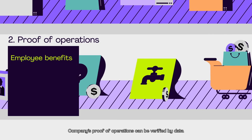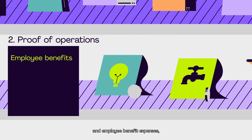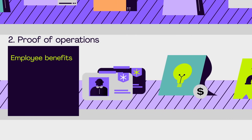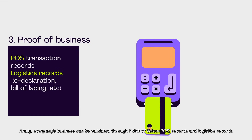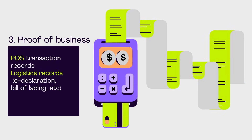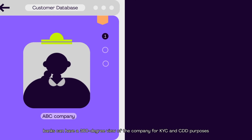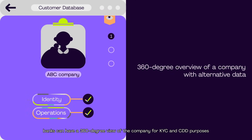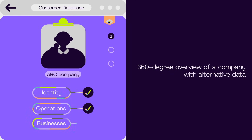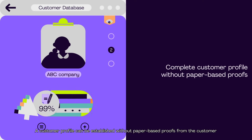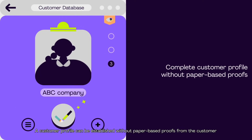Companies' proof of operations can be verified by payroll data and employee benefit expenses. Companies' business activity can be validated through point-of-sales records and logistics records. With these alternative data, banks can have a 360-degree view of the company for KYC and CDD purposes. A customer profile can be established without paper-based proofs from the customer.